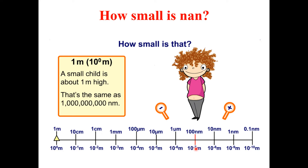Then 100 nanometers, equal to 10 raised to the power of minus 7 meters. Then 10 nanometers, equal to 10 raised to the power of minus 8 meters. Then 1 nanometer, equal to 10 raised to the power of minus 9 meters. And if we proceed toward further smaller length — 0.1 nanometers — that is equal to 10 raised to the power of minus 10 meters, which is the diameter of a hydrogen atom.